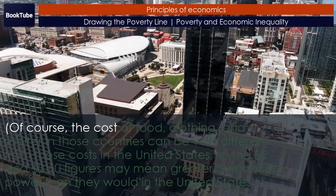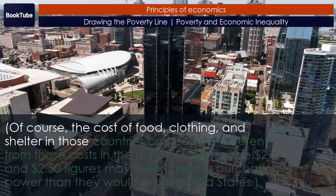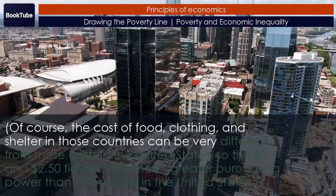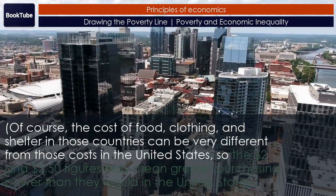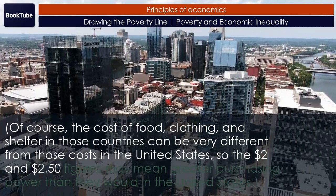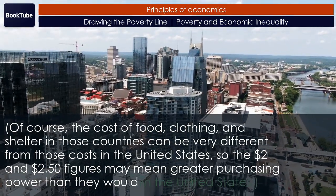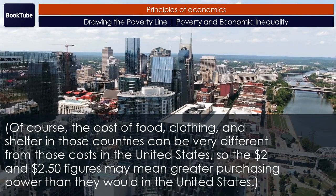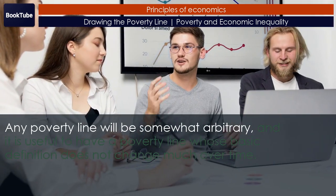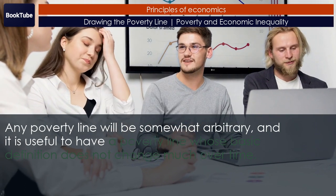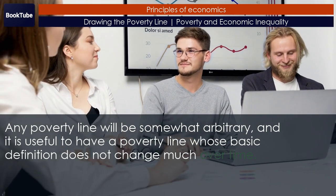Of course, the cost of food, clothing, and shelter in those countries can be very different from those costs in the United States, so the $2 and $2.50 figures may mean greater purchasing power than they would in the United States. Any poverty line will be somewhat arbitrary, and it is useful to have a poverty line whose basic definition does not change much over time.